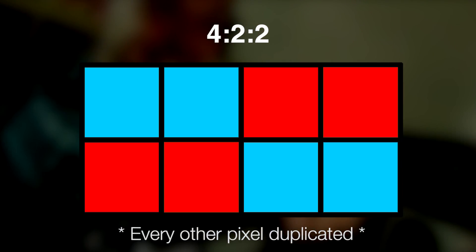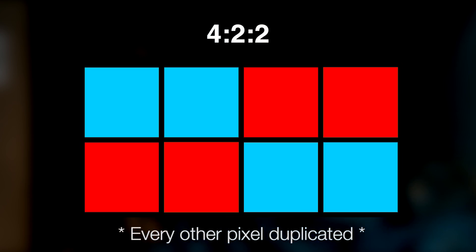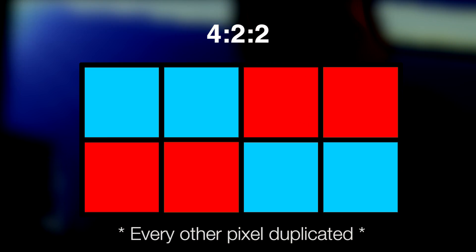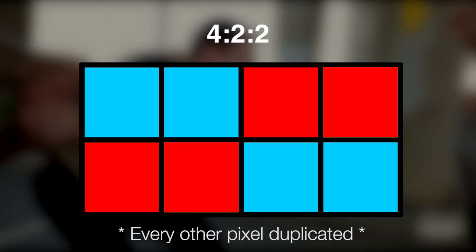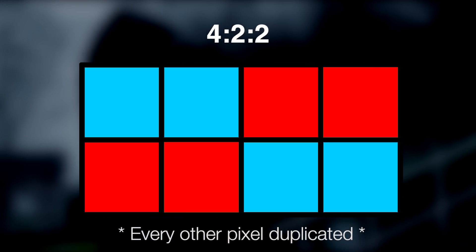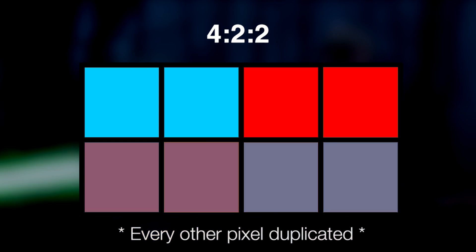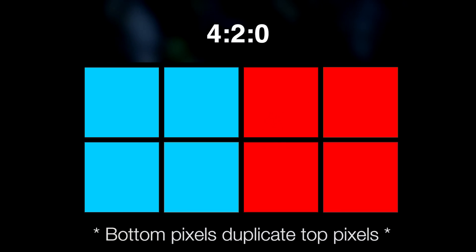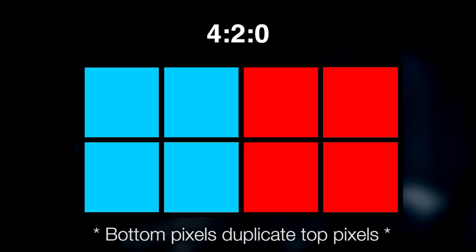If you went down to 4:2:2, it would mean that although there are four pixels across, only every other pixel would have its own information — so each one would be paired up and the color would just be shared. This is the same for the second row in 4:2:2. However, if you go to 4:2:0, all this means is that the second row is just copying exactly what happens on the first row above it.